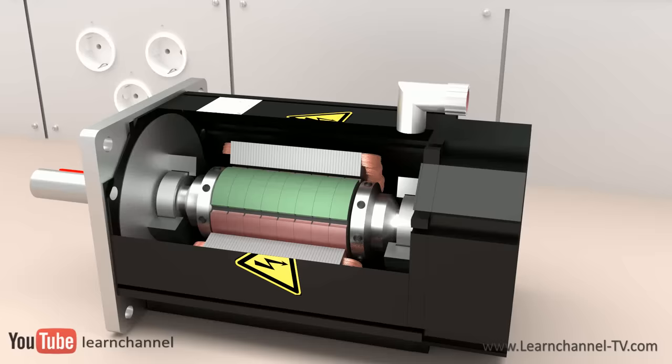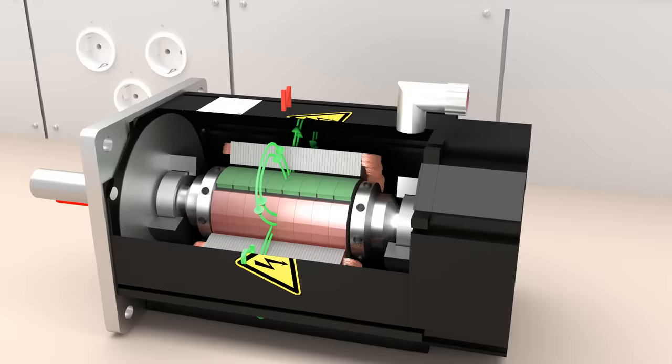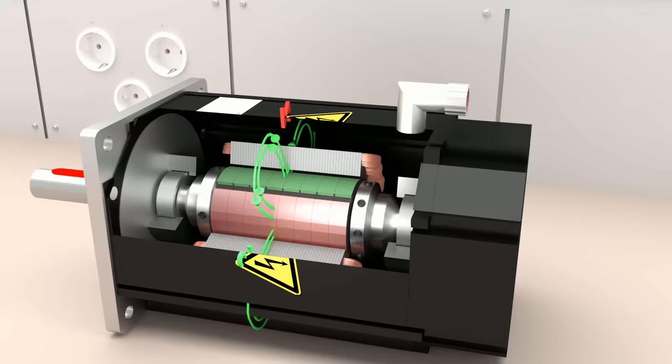The stator winding produces a rotating magnetic field, whose rotating speed and force is controlled by the amplifier and controller. In order to position quickly, all these motors must have a low moment of inertia, which can be achieved by an elongated shape.